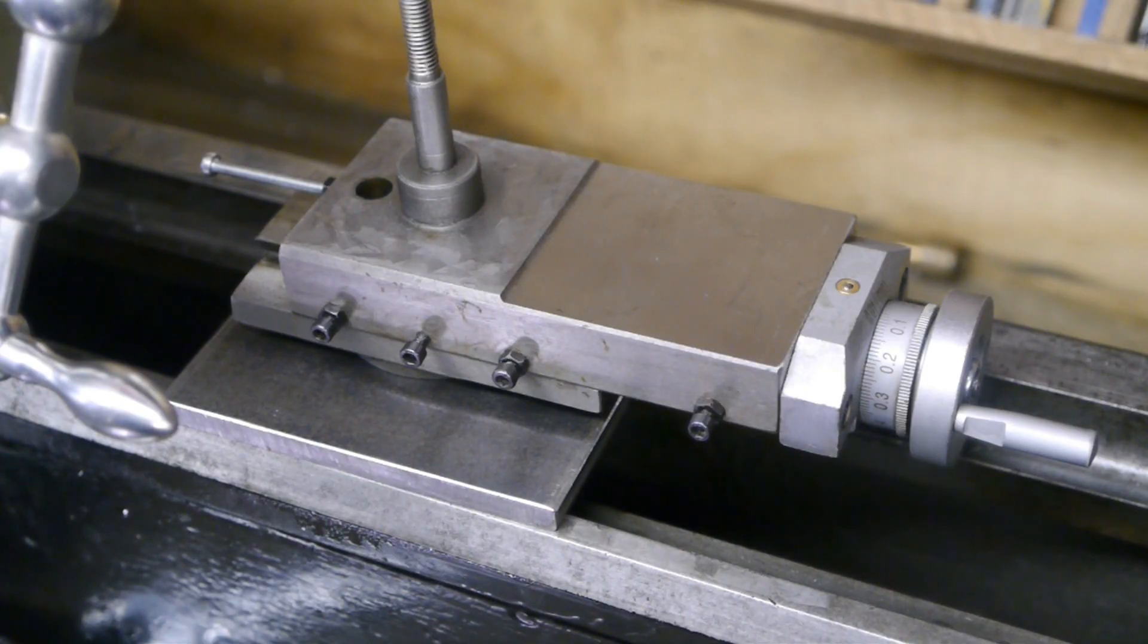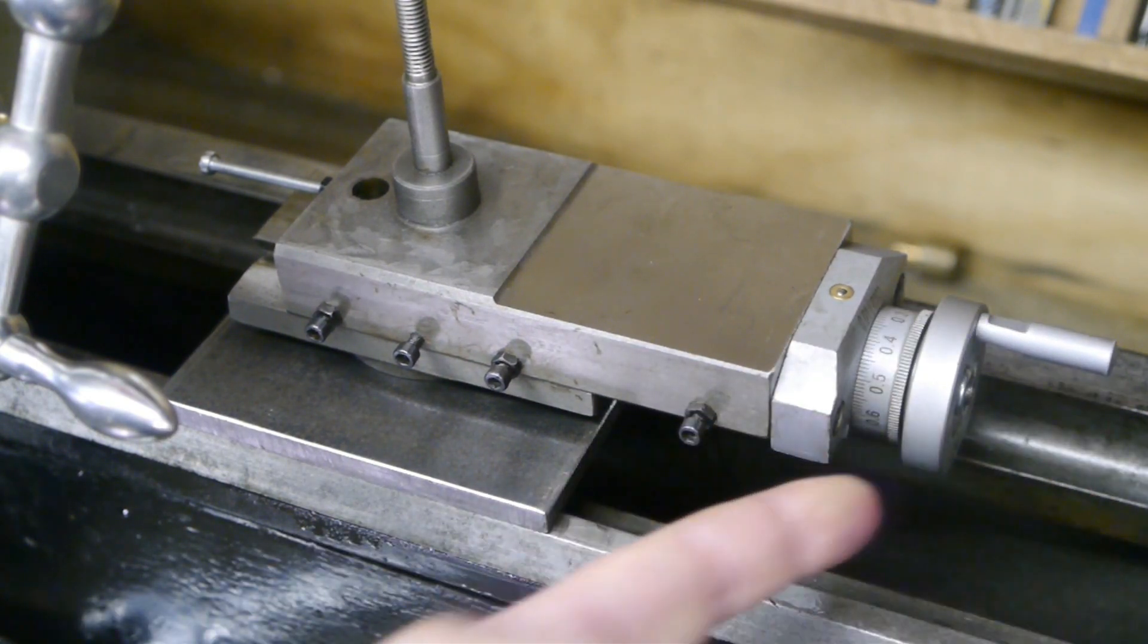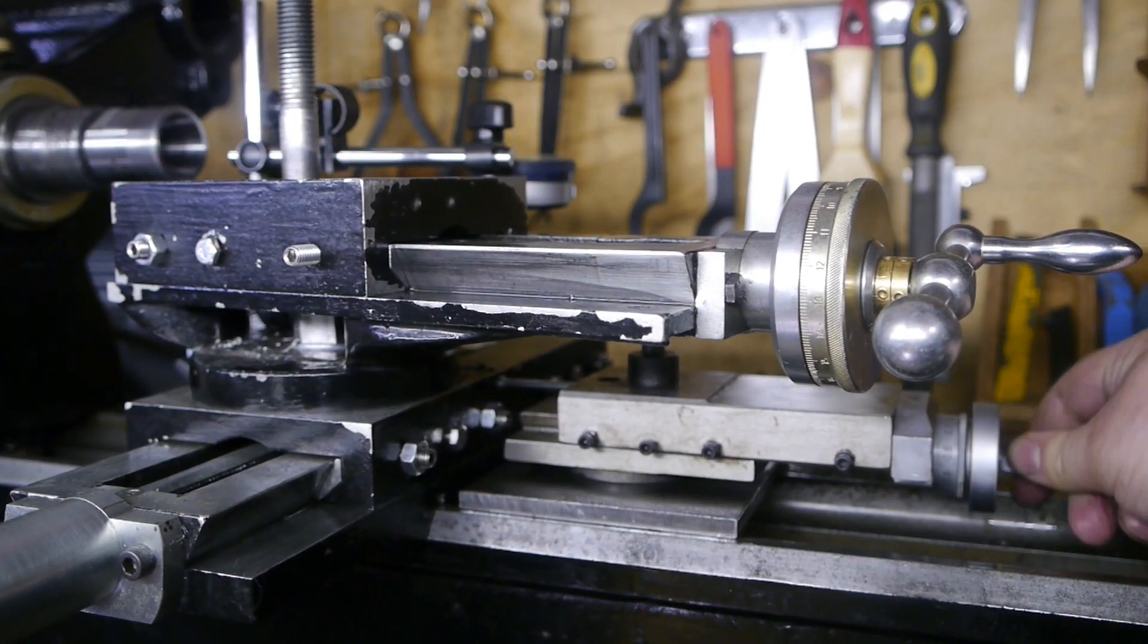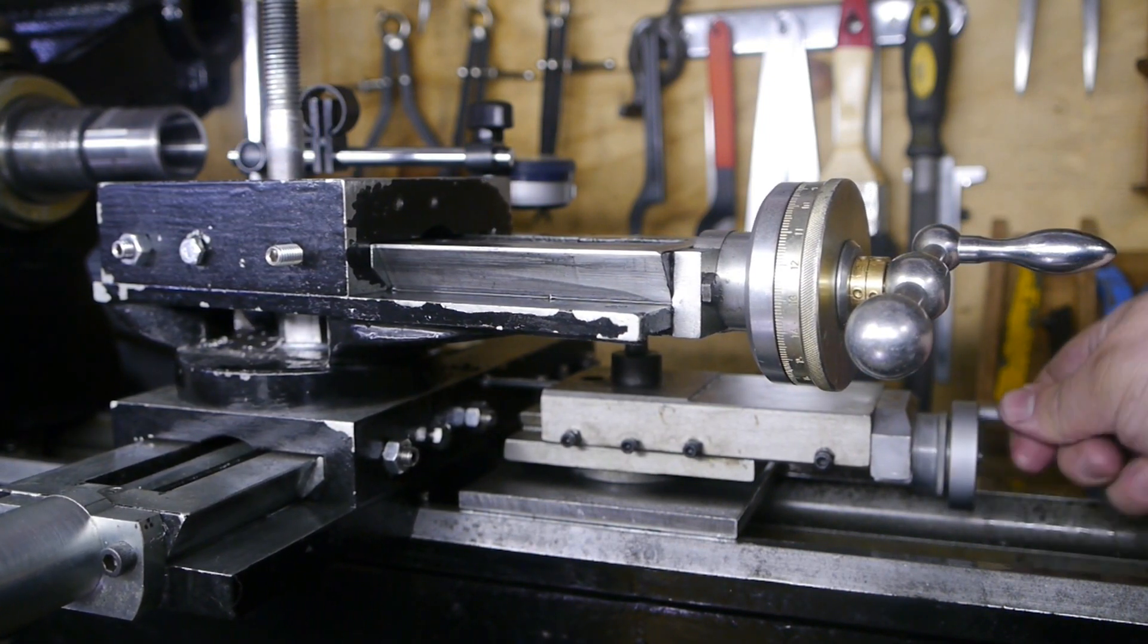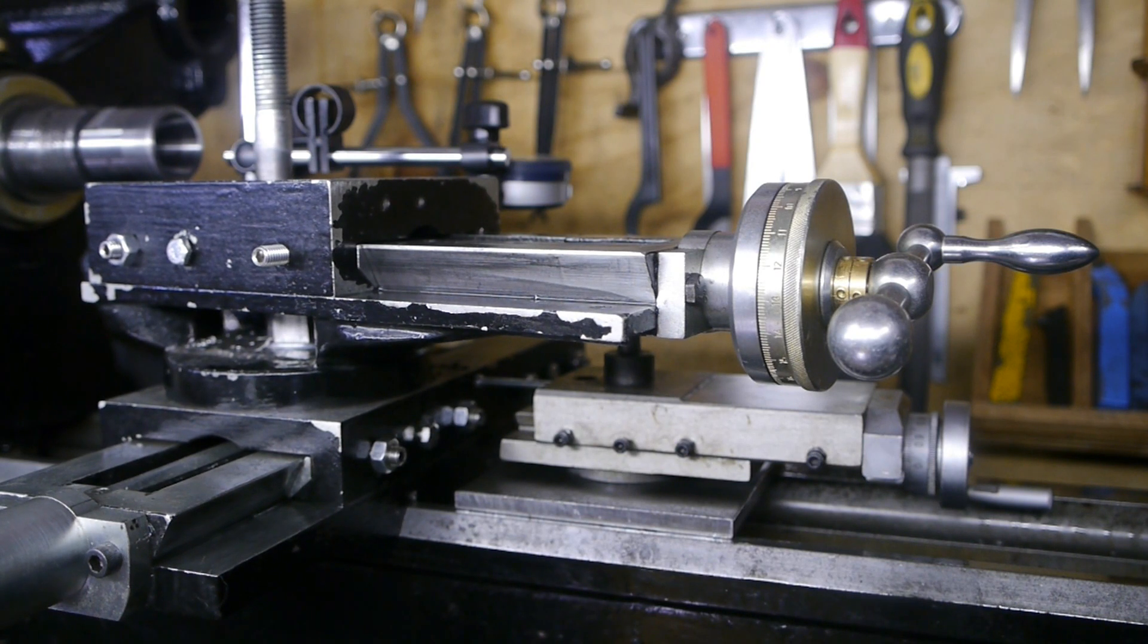Then I remembered I have a spare compound slide that I bought for making a milling attachment one day. It has a nice graduated dial here, and when bolted to the lathe bed, it's perfect for pushing the slides. I think this is going to work just fine. I will add some weight to the rear of the cross slide to stabilize it a bit.